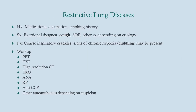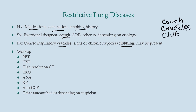When evaluating restrictive lung diseases, look for a history of medications, occupation, and smoking — that becomes very apparent when looking at the differential. Symptoms include exertional dyspnea, cough, and shortness of breath, with other symptoms depending on etiology. Coarse inspiratory crackles will be noted on physical exam, and there may be signs of chronic hypoxia — chief among them clubbing. Remember the three C's: cough, crackles, and clubbing. That's classic restrictive disease.